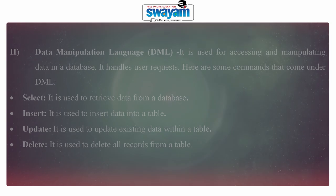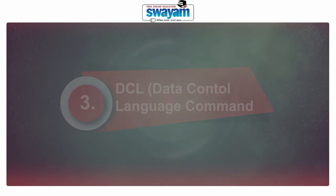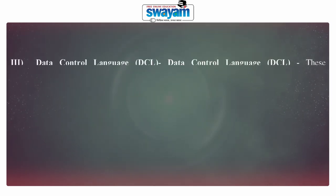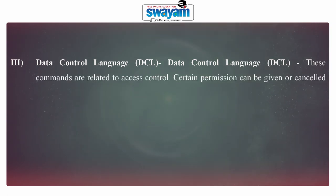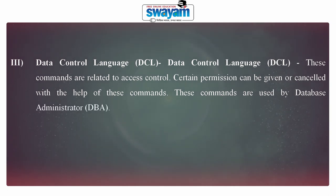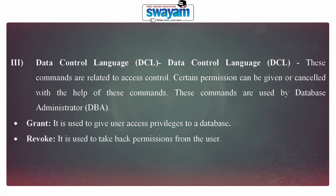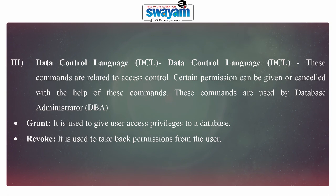The third category of command is Data Control Language (DCL) commands. These commands are related to access control. Certain permissions can be given or cancelled with the help of these commands, and they are used by the database administrator. Two commands are mainly used: Grant — used to give user access privileges to a database; and Revoke — used to take back permissions from the user.